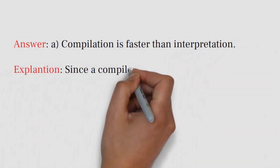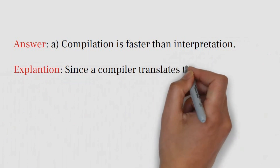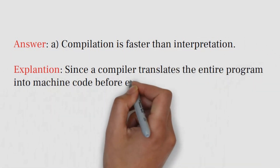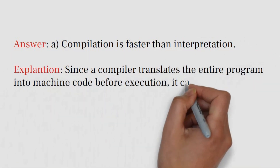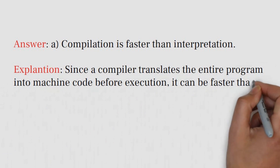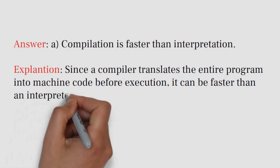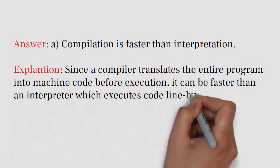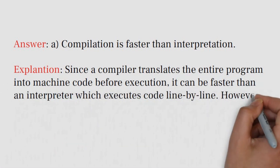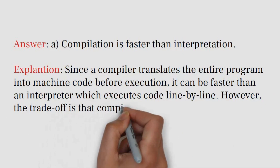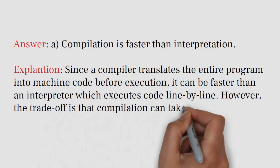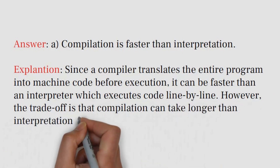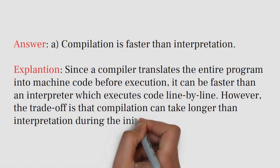Explanation: Since a compiler translates the entire program into machine code before execution, it can be faster than an interpreter which executes code line by line. However, the trade-off is that compilation can take longer than interpretation during the initial setup.